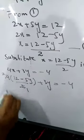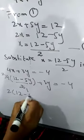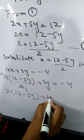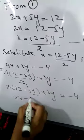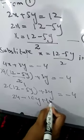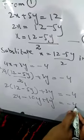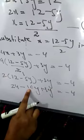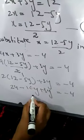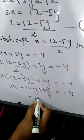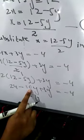2 into 12 minus 5y, that's 3y equals minus 4. 2 times 12 is 24, minus 2 times 5y is 10y, plus 3y equals minus 4. These are the like terms. Minus 10y plus 3y. 10 minus 3 would be equal to 7. Negative sign would be there because the greater value has the negative sign.